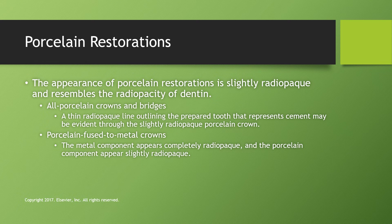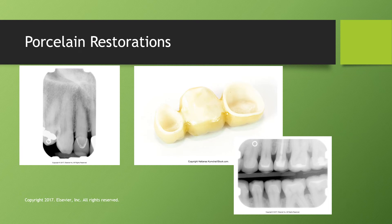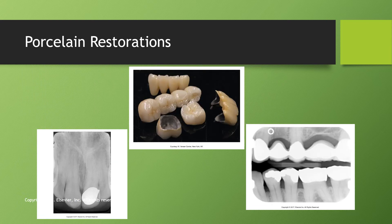Porcelain restorations appear slightly more radiopaque and resemble the radiopacity of dentin, making them hard to distinguish. Usually you'll see a thin radiopaque line outlining the prepared tooth representing the cement used to attach the porcelain crown. In a porcelain-fused-to-metal (PFM) restoration, it looks like a metal crown with a less bright white section around it — the bright white of the metal is visible, and the porcelain is baked on the outside.